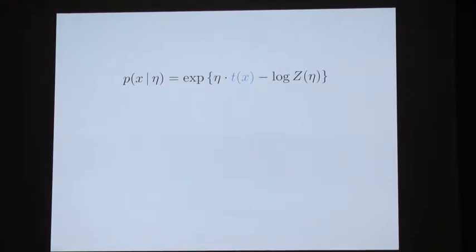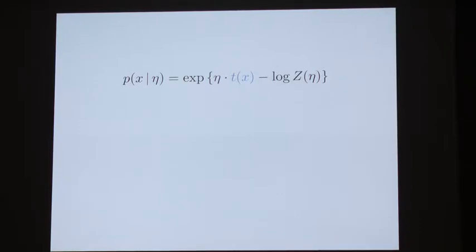However, there are a lot more distributions you can get if you use exponential families along with latent variables. This is where you write down an exponential family joint density and then marginalize out some of those variables. Things you can write this way are bigger than just exponential families — you can get Student-t distributions, Laplace distributions. In fact, I don't know a distribution you can't get that way. A lot of the models I like to work with, particularly in time series, have this kind of form.